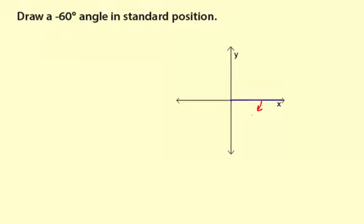The x and the y-axis make a 90 degree angle, so a 60 degree angle is going to be more than halfway — about two-thirds of the way. So maybe something like that, roughly. And we'll label it negative 60 degrees.